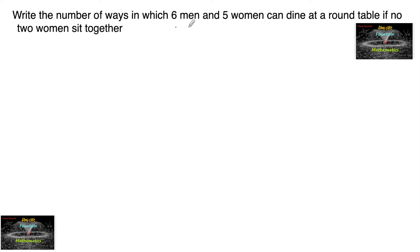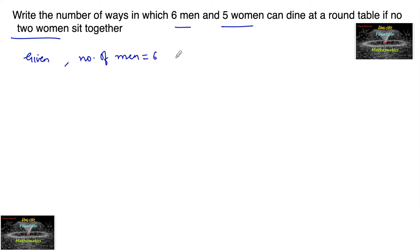Write the number of ways in which six men and five women can dine at a round table if no two women sit together. Here, the number of men is equal to six and number of women is equal to five, where number of men is more than number of women. We need to find the arrangement of these six men and five women at a round table such that no two women sit together.